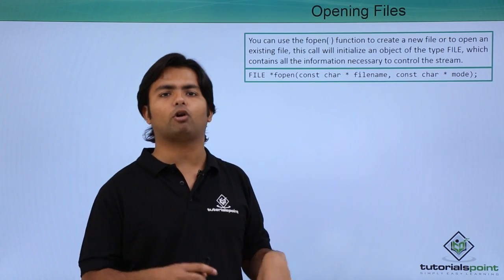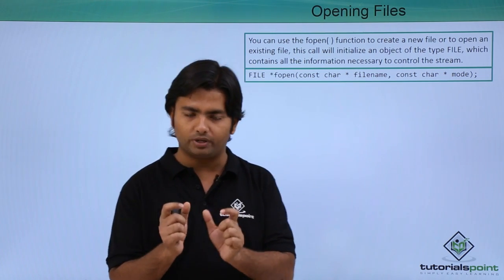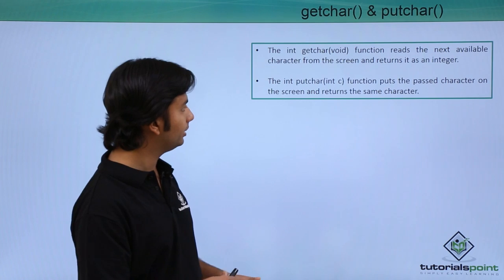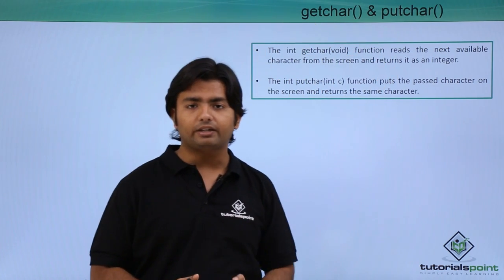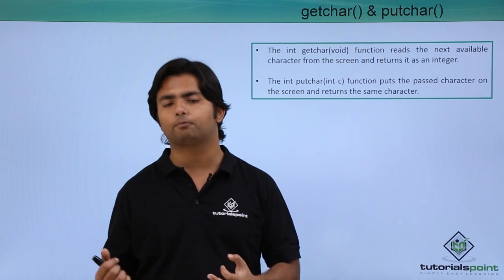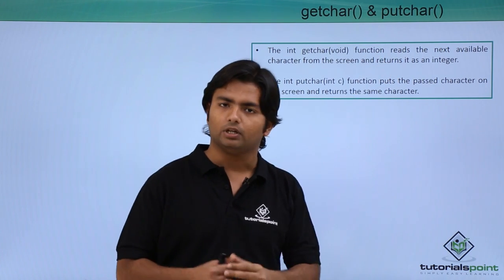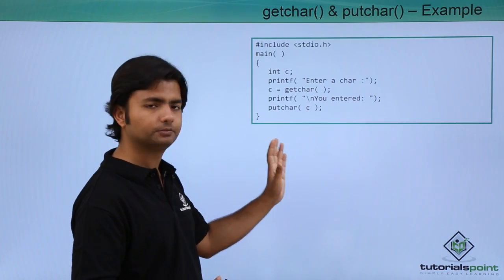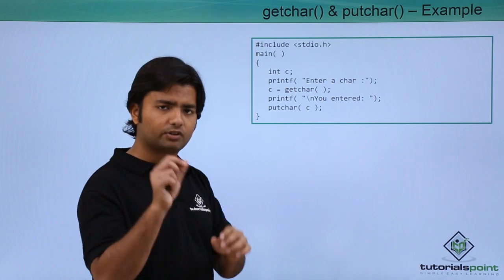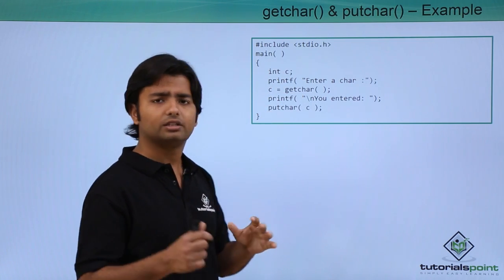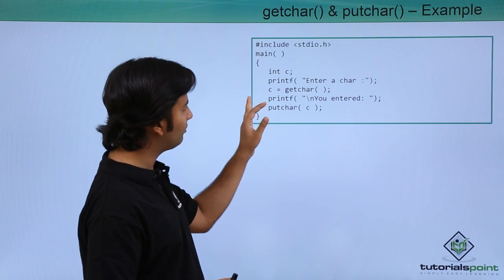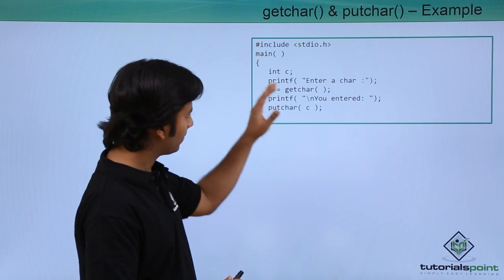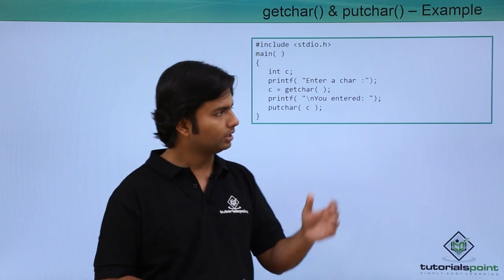Before getting deeper into files, let's first see the different ways of working with just I/O — keyboard as the input device and screen as the output device. Let's start with getchar and putchar. These are used whenever you want to take an input of character type. getchar is for taking input and putchar is for printing the character. You don't need to pass any argument to getchar — when you enter a character it will be assigned to the variable as its ASCII value. When you want to print, you pass that variable to putchar.